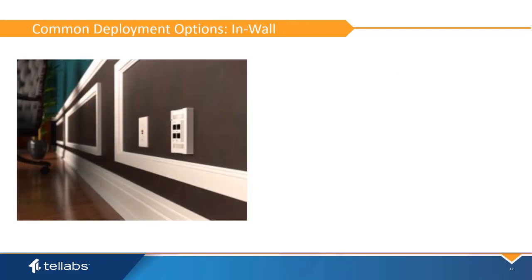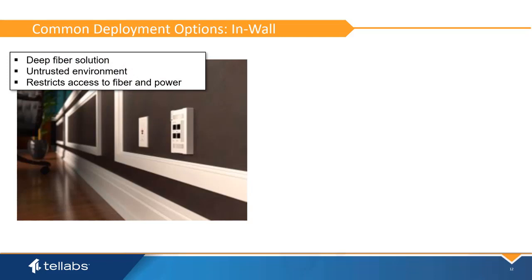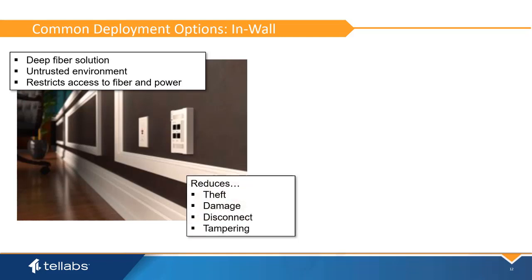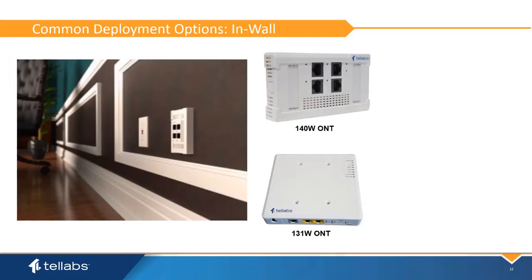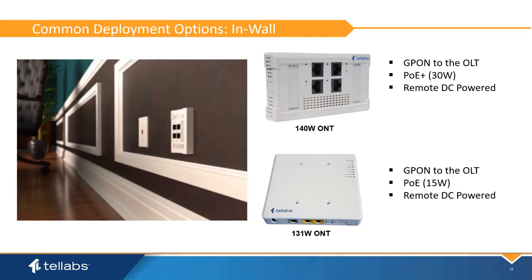In-wall deployments offer a deep fiber solution for the untrusted environment. The fiber and power connectivity are safely housed inside the wall, back to the COM closet. Wall plate and Ethernet connectors are identical to legacy active Ethernet. This reduces ONT theft, damage, disconnect, and fiber tampering, and provides a cleaner and more economical installation. The ONT-140W and 131W are used for in-wall deployments. These are both GPON ONTs that support PoE and are typically remotely powered. The ONT-140W provides four uniports while the ONT-131W has three.